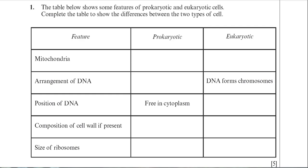Welcome to the June 2011 BY-1 paper. We're looking at question 1, and as is quite typical for question 1, we have a table to fill in. The question is about the features of prokaryotic and eukaryotic cells, and you just need to complete the table to state whether a prokaryotic or eukaryotic cell has the features listed in the left-hand column.